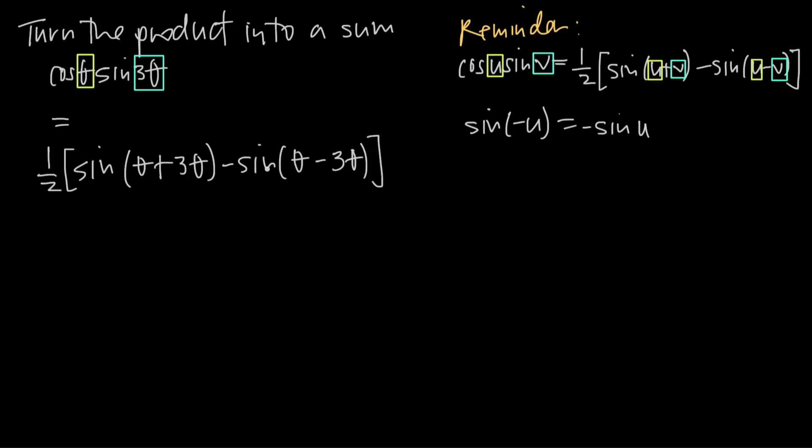So notice that this is already the difference of two sine functions, we just need to simplify it. So we're going to get sine of 4 theta. And then here minus sine theta minus 3 theta is negative 2 theta. So I'm going to get negative 2 theta.